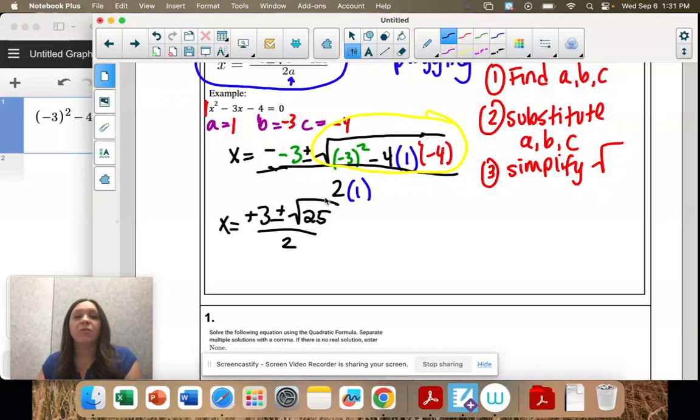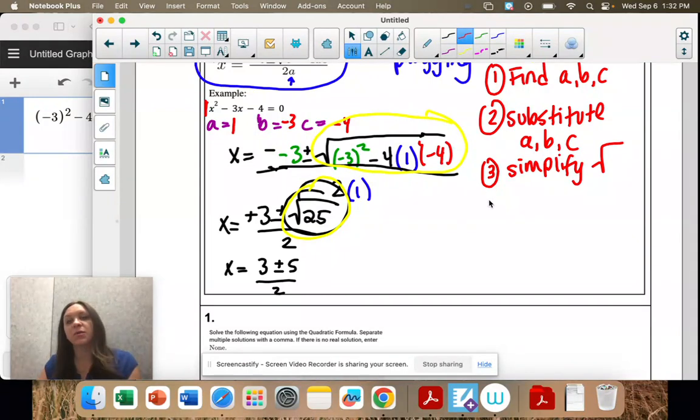And I really hope that you're like, perfect square. What's the square root of 25? 5. So I'm going to rewrite it down here. x equals positive 3 plus or minus 5 over 2. So we simplified the square root.